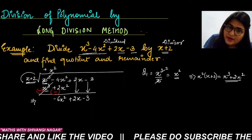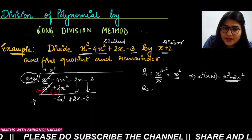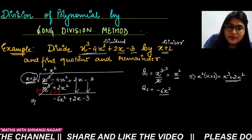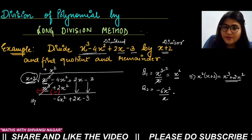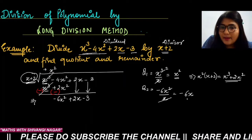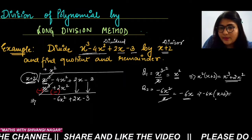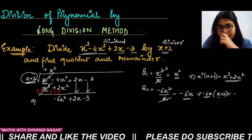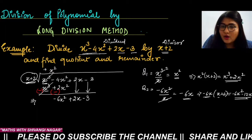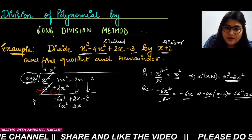Now for the next term of the quotient: take minus 6x², the first term of the new dividend, and divide by x, the first term of the divisor. You get minus 6x. So minus 6x is the next quotient term. Now multiply minus 6x by the divisor (x plus 2): minus 6x times x is minus 6x², and minus 6x times 2 is minus 12x. So we place minus 6x² and minus 12x in the next row.